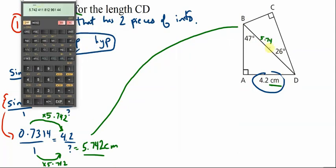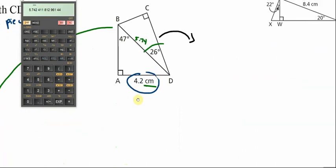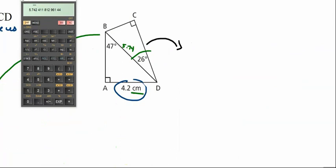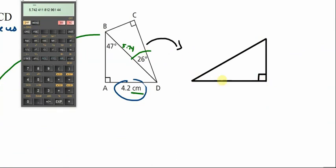Now we have two pieces of information on the upper triangle. I'll redraw it rotated so it's easier to see. There's the right angle, the 26-degree angle, and the hypotenuse is 5.742 centimeters. D is at one vertex, C at another — so we're solving for the length CD.